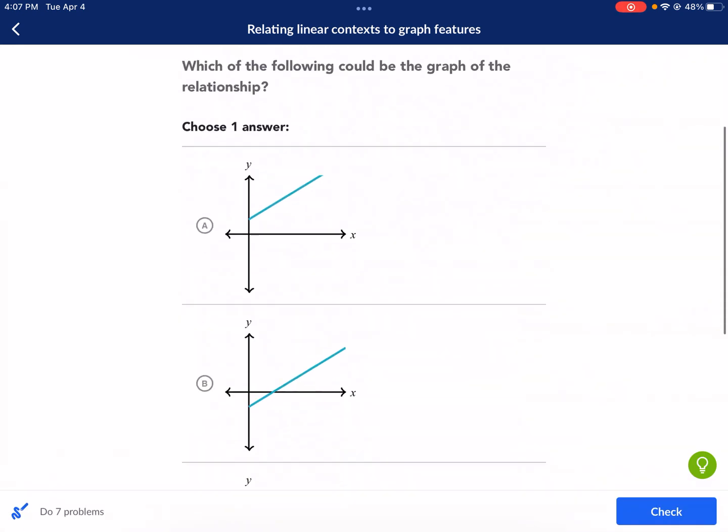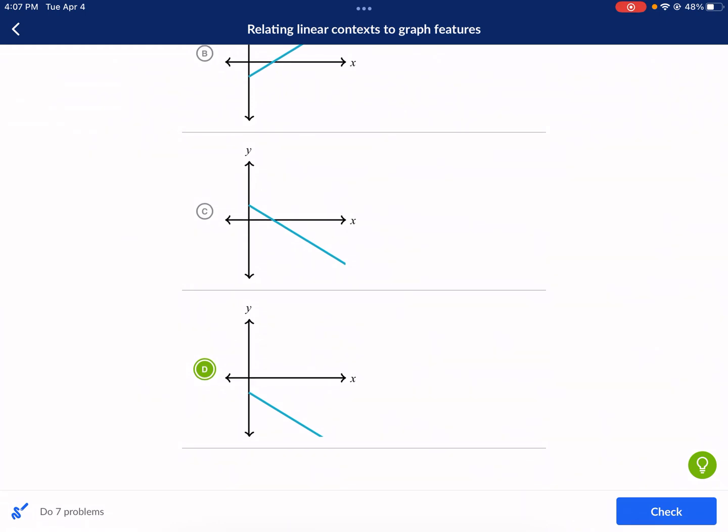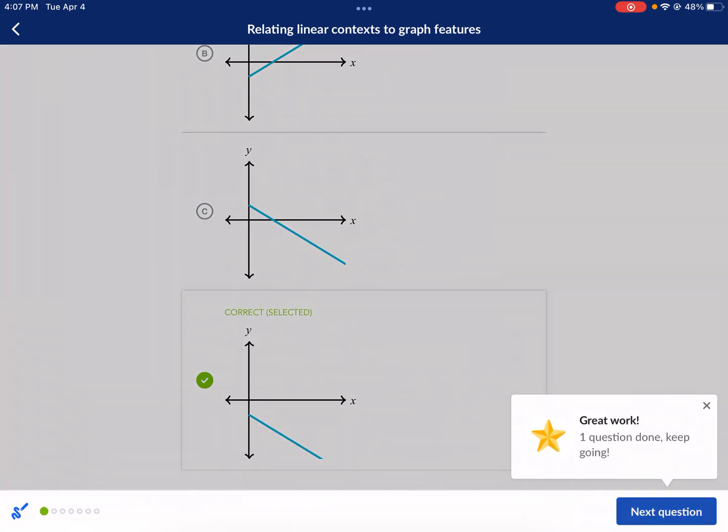And I'm guessing that X is like the time. Yeah, it doesn't specify, but it's just showing that it's going at a constant rate for time. Let's check it. And we got it.